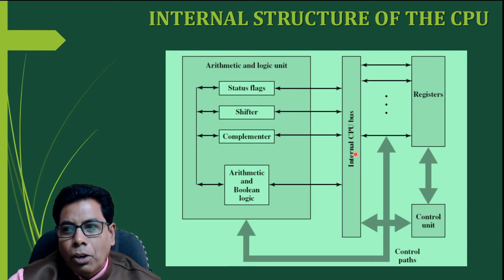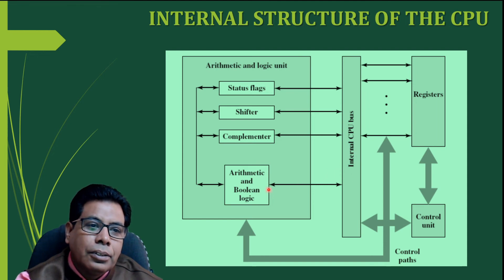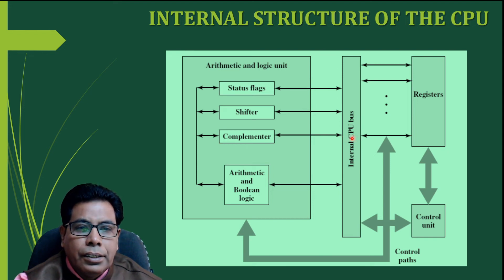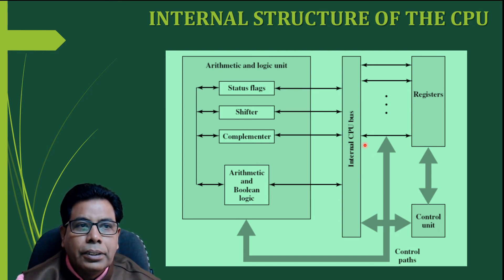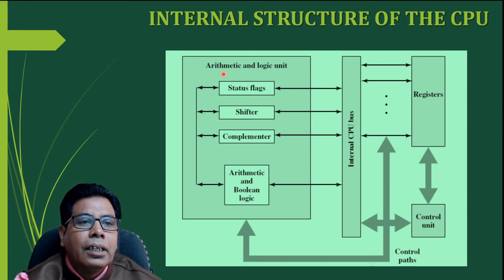The ALU operates fast because it operates only on data in the internal processor memory. It performs arithmetic operations on the data, and the internal bus carries the data from registers to the ALU. The flow of data goes through this internal CPU bus. When we study the detailed structure, we will study all the registers present in the CPU as well as the details of the Arithmetic and Logic Unit.